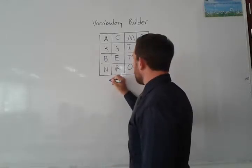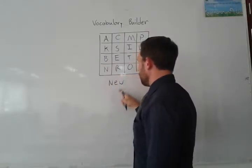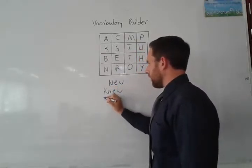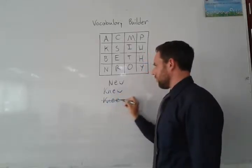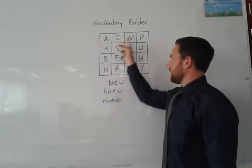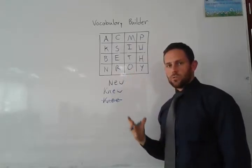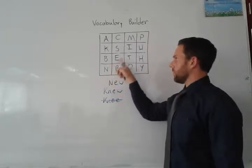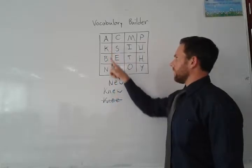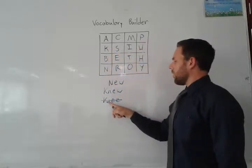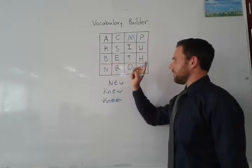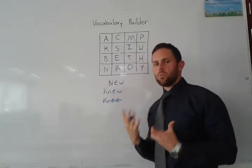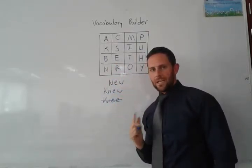For example, you can write 'new' — or with a K spelling. But 'ni' doesn't work, because it's just one E. You tell your students: you can write one word with these letters. For example, 'new' works, but 'ni' doesn't because there's only one E. How many words can they create in this format in English?